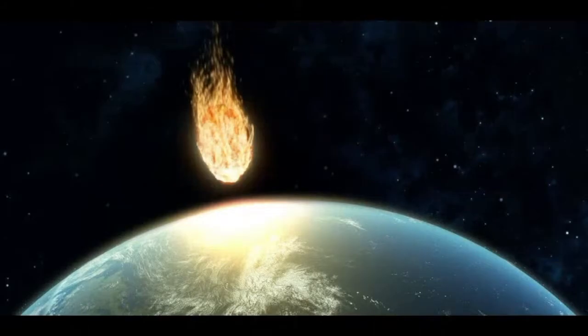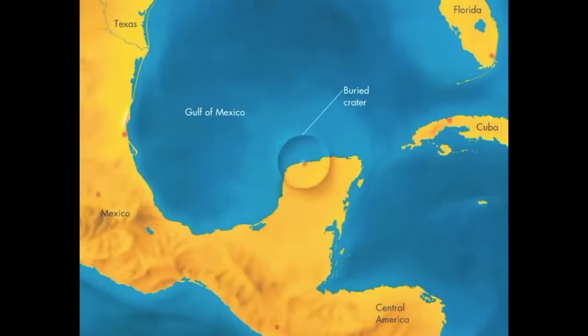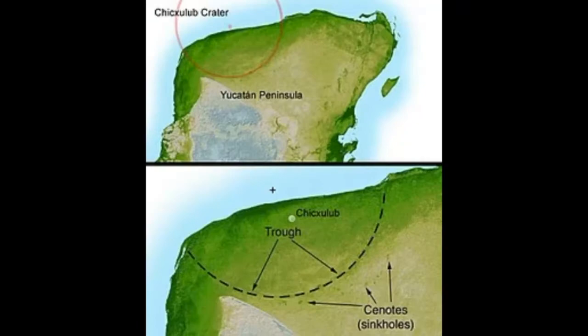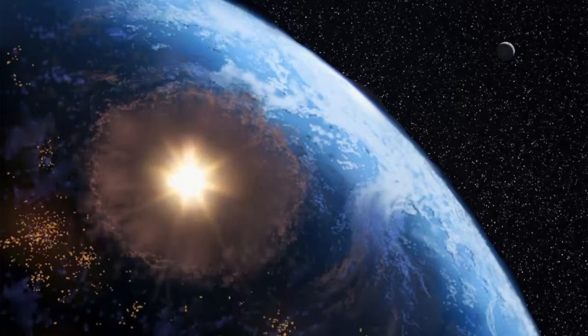The impact hypothesis was bolstered by the discovery in the 1990s of the 112-mile-wide crater geographically centred near the Mexican town of Chicxulub located off the Gulf of Mexico, which provided conclusive evidence that the KT boundary line sediment represented debris from an asteroid impact.